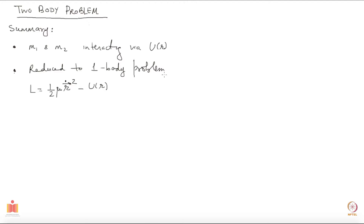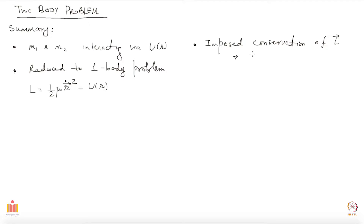Then we imposed conservation of angular momentum. Using only the fact that conservation of L implies two things — first, that the direction of L is going to be fixed, and second, that the magnitude is not going to change — we could say that the motion happens in a plane. The motion will be planar.